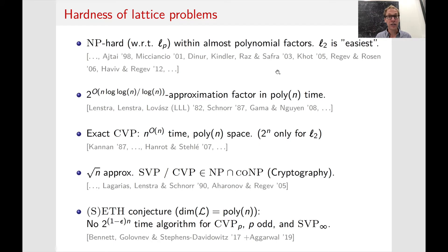For a long time it was a big open question whether SVP with respect to L2 was NP-hard, until this was finally settled in 1998 by Ajtai. And in some very precise sense, it was later shown that the L2 norm is easiest for these lattice problems. We have hardness for almost polynomial approximation factors, but the hardness does not really seem to stop there — these problems are interesting for virtually any approximation factor.